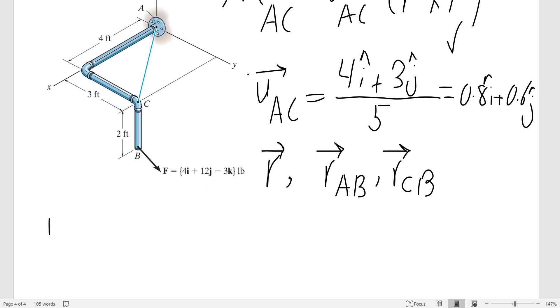The position vector from A to B - because A is the origin, it's just the coordinate of B. So that would be 4i, 3j, minus 2k.